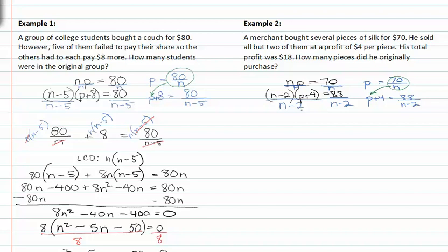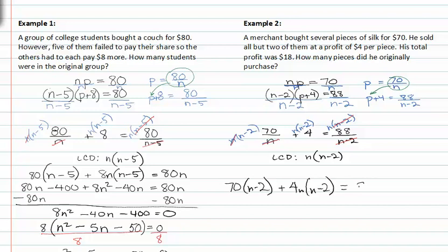we now get seventy over n plus four is equal to eighty-eight over n minus two. Our LCD is n times n minus two, and I'll multiply that through to each term in my equation. This divides with my denominators to clear my fractions, and I have seventy times n minus two plus four n times n minus two equals eighty-eight n. Distributing I get 70n minus 140 plus 4n squared minus 8n equals 88n.